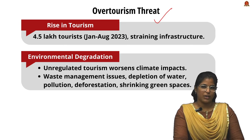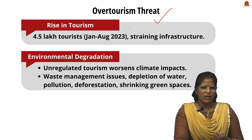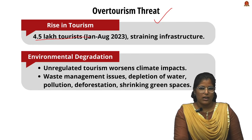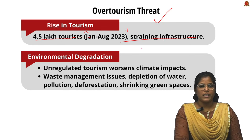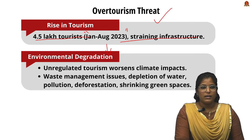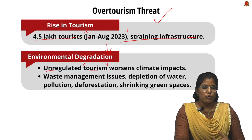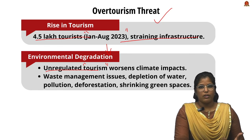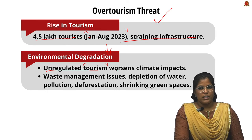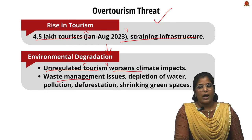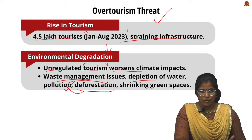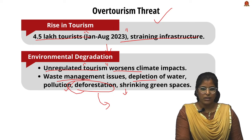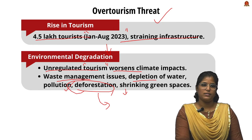Over-tourism poses major threats to Ladakh's ecosystem and wildlife. Data shows 4.5 lakh tourists visited between January and August 2023, straining local infrastructure. Unregulated tourism — where visitor numbers are unpredictable — leads to worsening climate impacts, waste management issues, water depletion, pollution, and deforestation due to construction of accommodation. Shrinking green space is also a direct consequence.